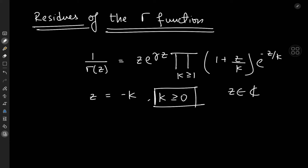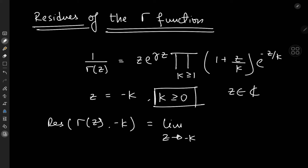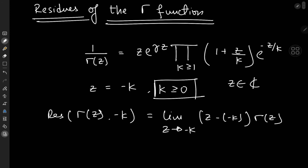Since we have simple poles, we have all the required information for calculating the residues. The residue of the gamma function at z = −k is the limit as z tends to −k of (z − (−k)) times Γ(z), which means we're interested in the limit as z approaches −k of (z + k)·Γ(z).